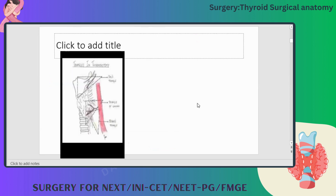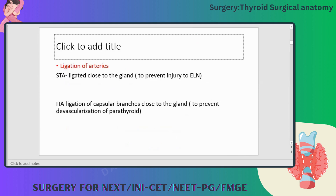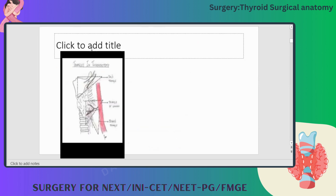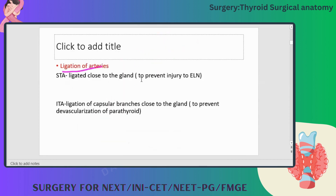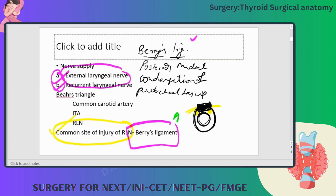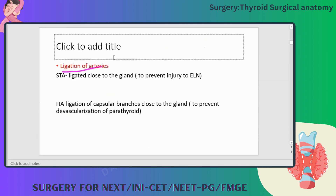Beer's triangle — this diagram is from ENT as well. This triangle is bounded by three sides: the common carotid artery, the inferior thyroid artery, and the recurrent laryngeal nerve. These three form a triangle, known as Beer's triangle.